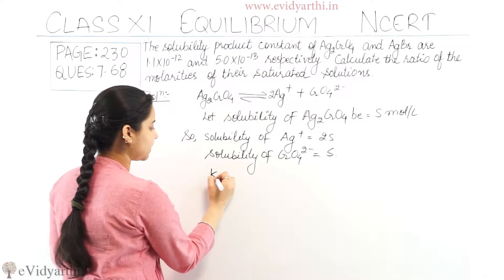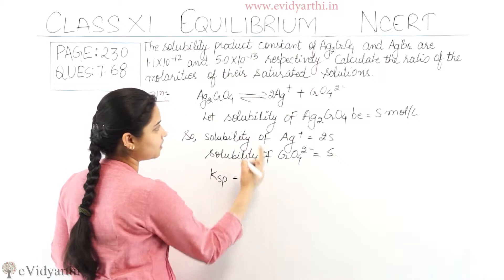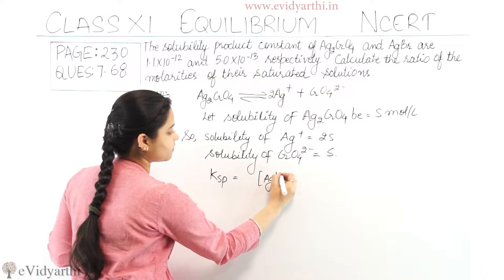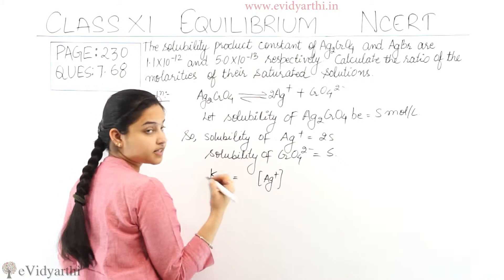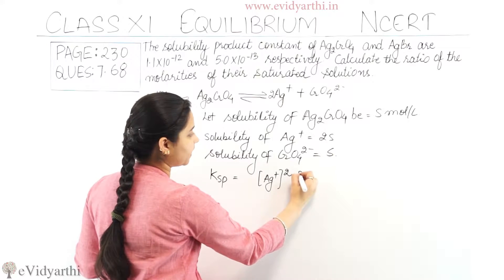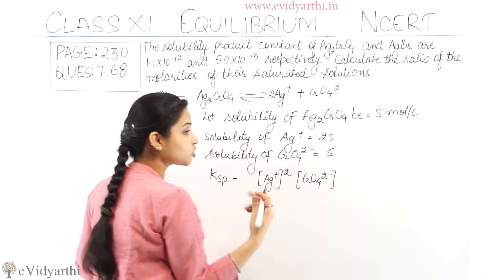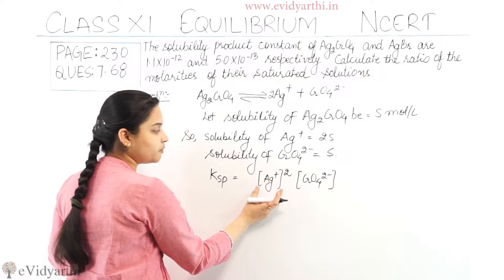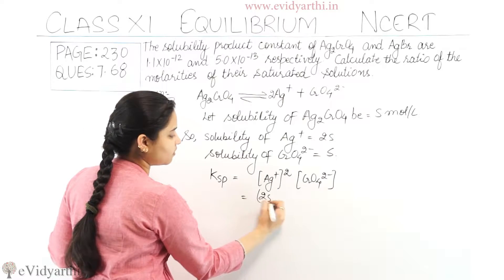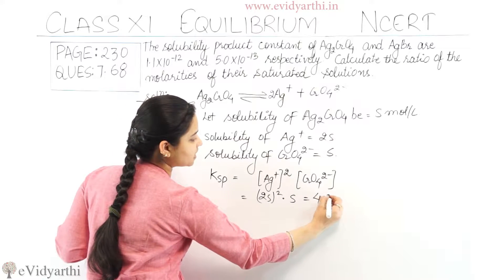KSP, that means the solubility product constant, is equal to the concentration of Ag⁺ raised to the power of its stoichiometric coefficient, multiplied by the concentration of CrO₄²⁻. So the concentration of Ag⁺ is 2S, giving (2S)² × S, which becomes 4S³.